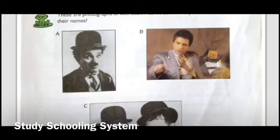Alphabet B is Moeen Akhtar. Moeen Akhtar ek Pakistani film, television and stage artist, humorist, comedian and impersonator hain, jo ke Radio Pakistan mein kaam karke famous hue.